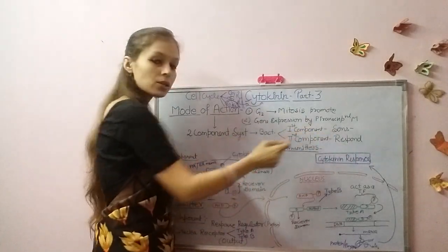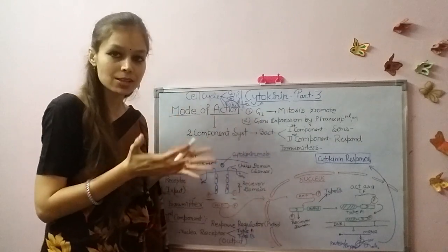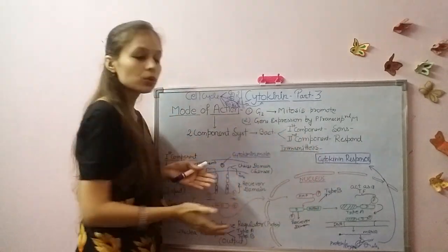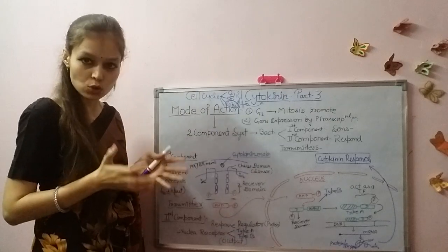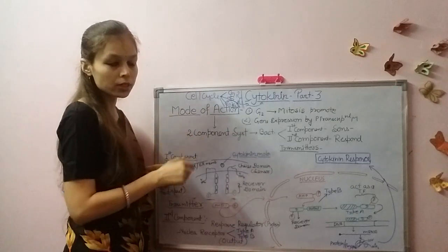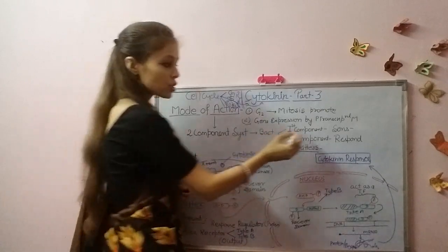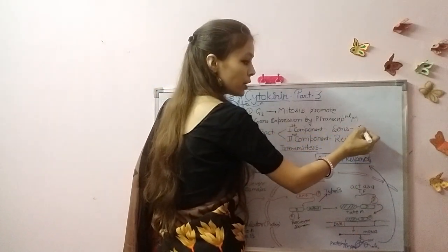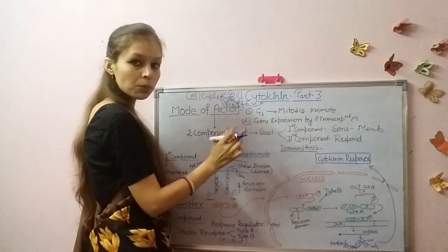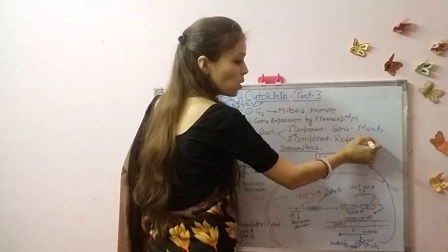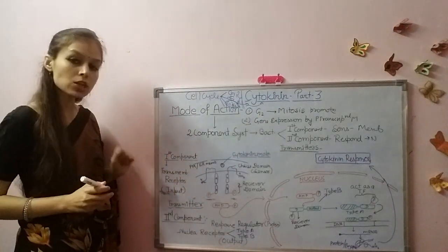The first component is called the sensor domain. The second component works in response. When we talk about the first component, there are membrane receptors. When we talk about the second component, there is a nuclear receptor.